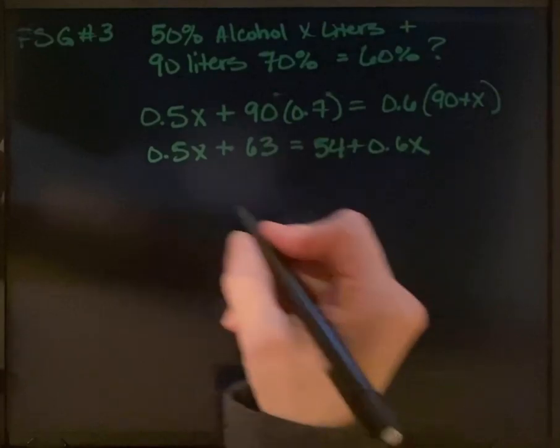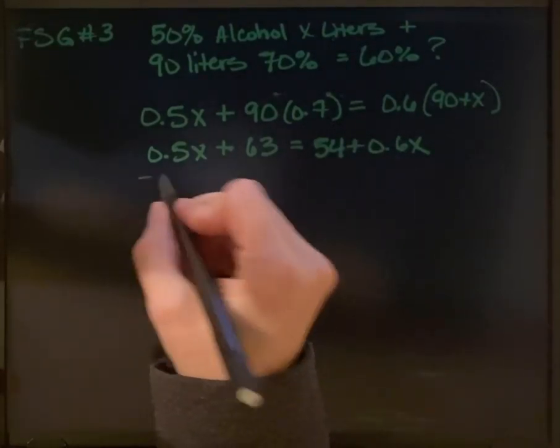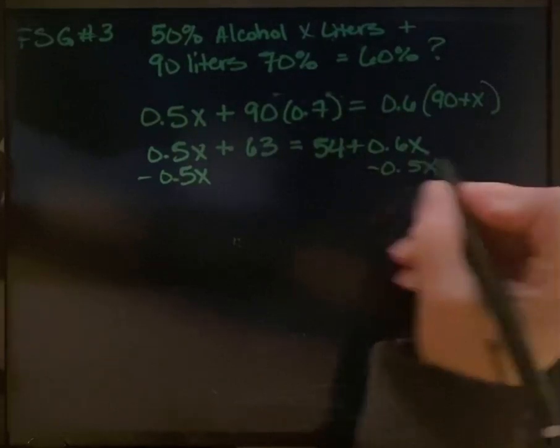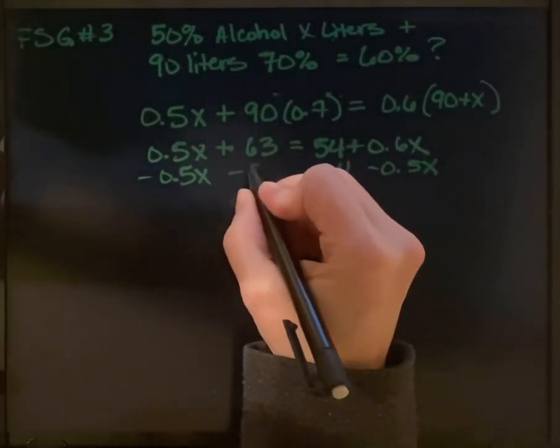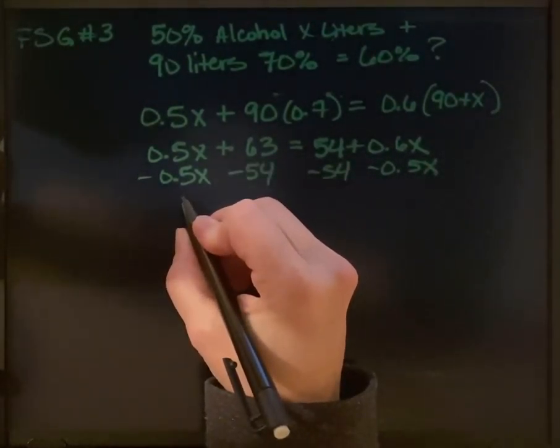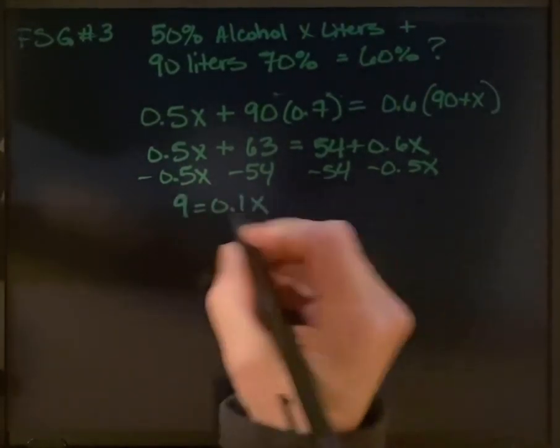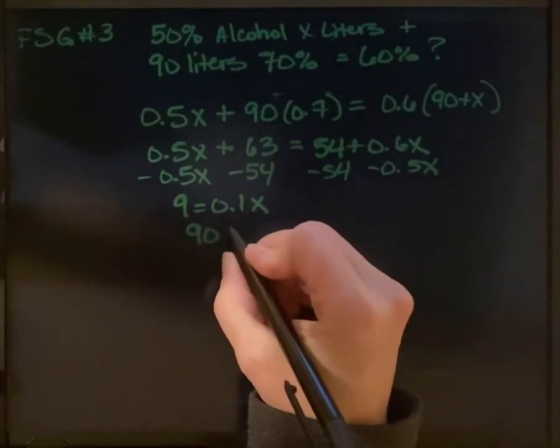And we can combine our like terms. So we're going to subtract 0.5x here and 54 here. That's going to give us 90 liters.